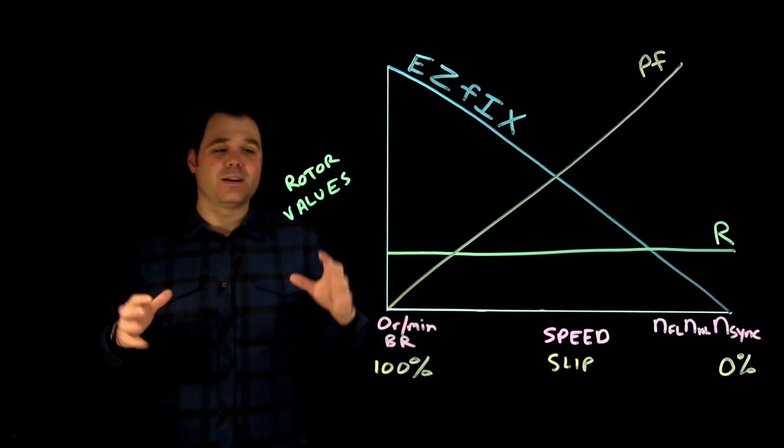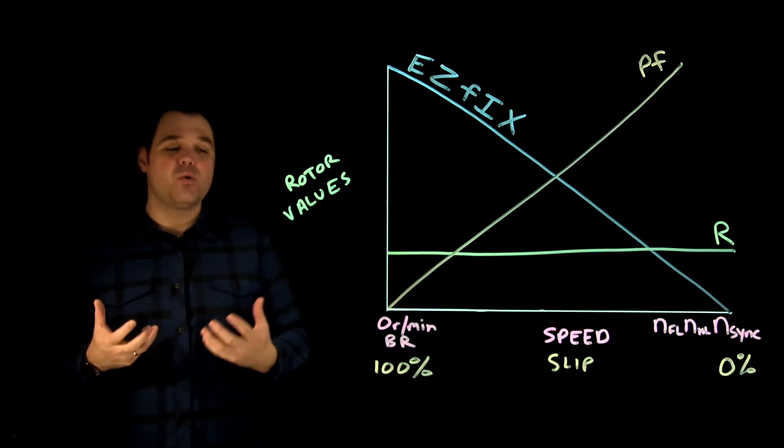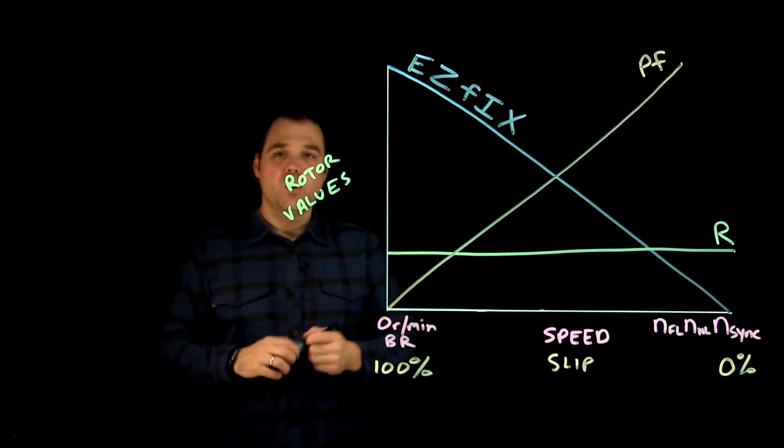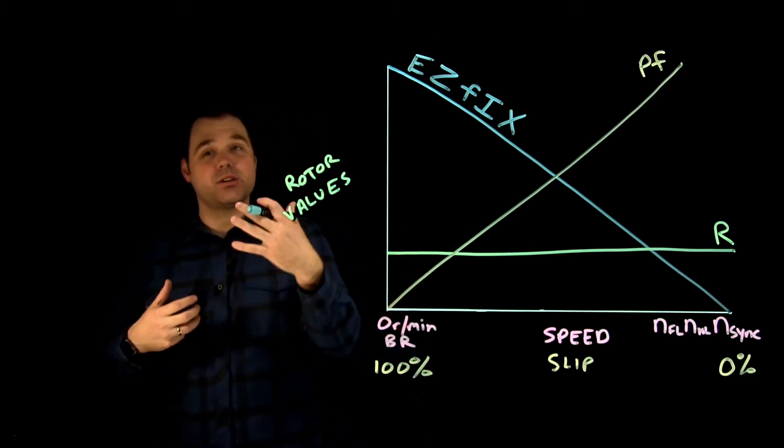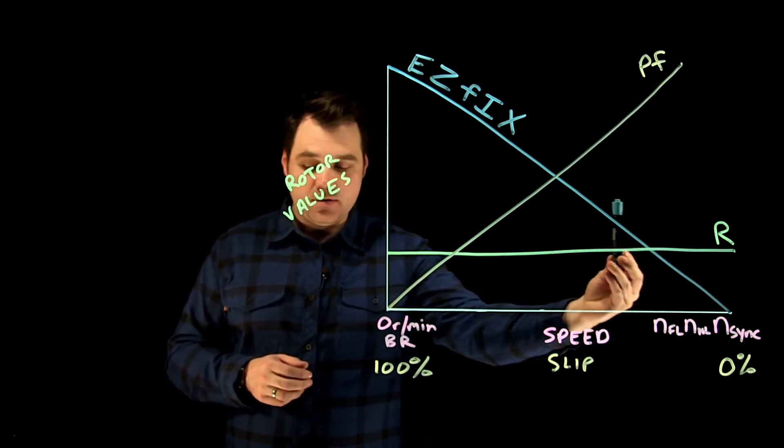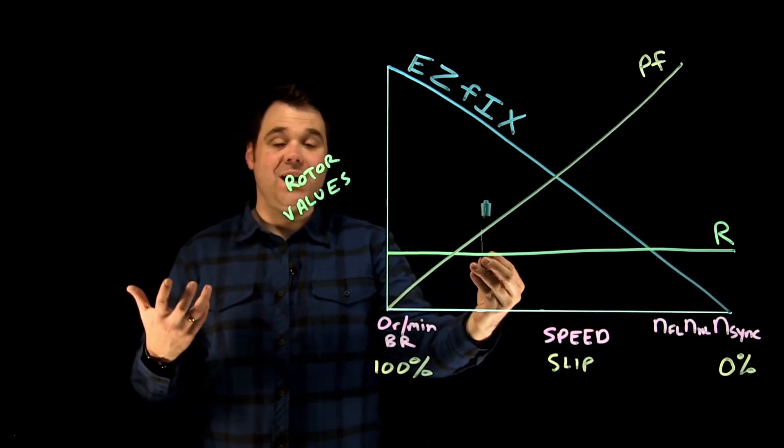So that's just kind of a quick chart when I think about adding load or removing load from a rotor. Well, if I add load, if I start putting more and more boxes on a conveyor belt, I'm going to move this way. As I remove load, I'm going to move this way.